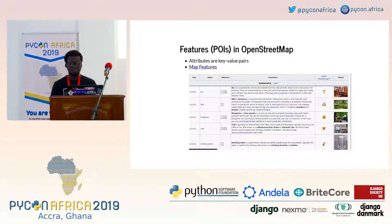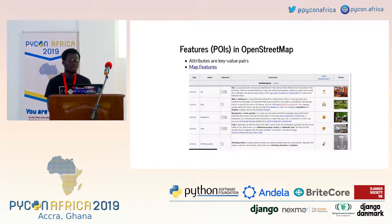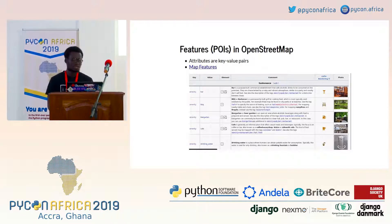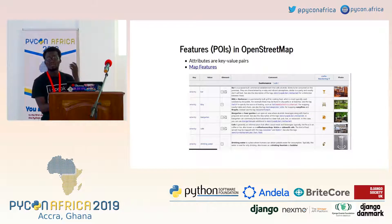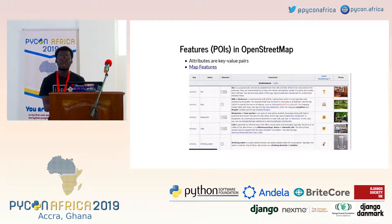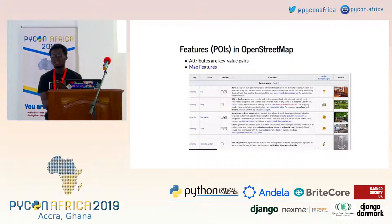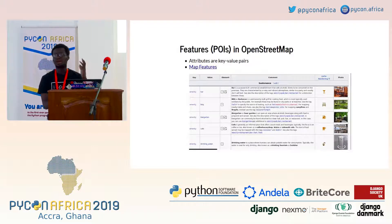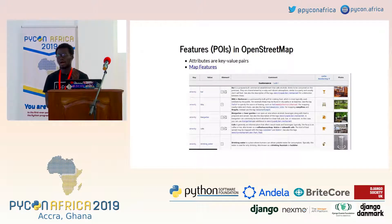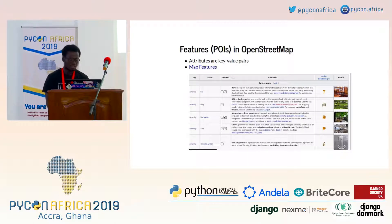OpenStreetMap is used by many. Facebook is one big user. Uber uses it as well. For humanitarian purposes it's the map that saves lives — for disaster risk management, first responders need just basic data. When there's an earthquake, all you need as a responder is which roads are disconnected. Even two roads on the map is better than none for Red Cross, USAID, or any responder coming in.